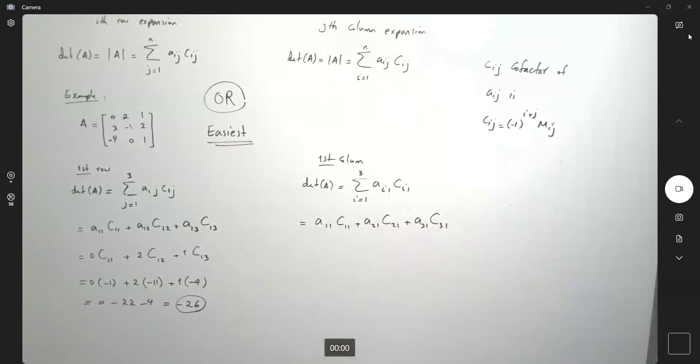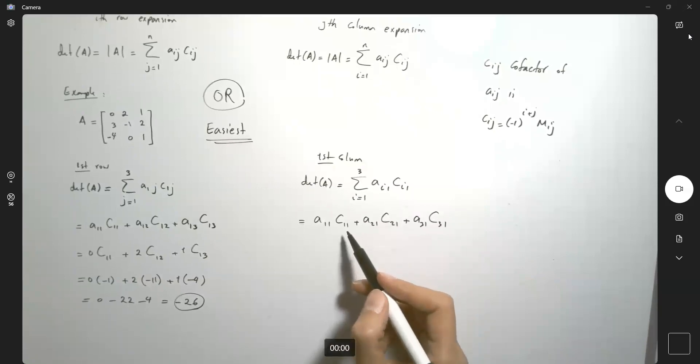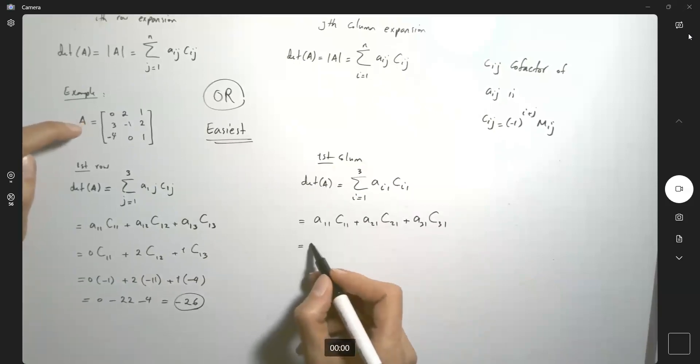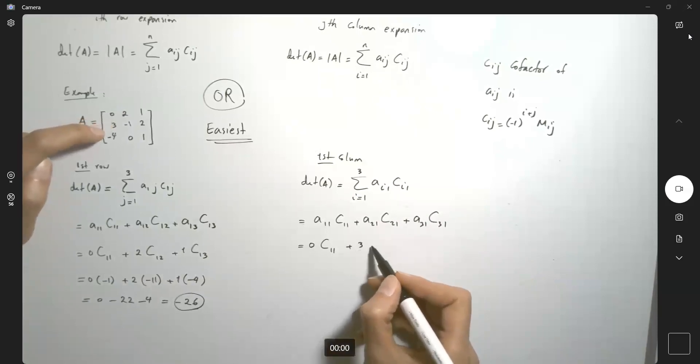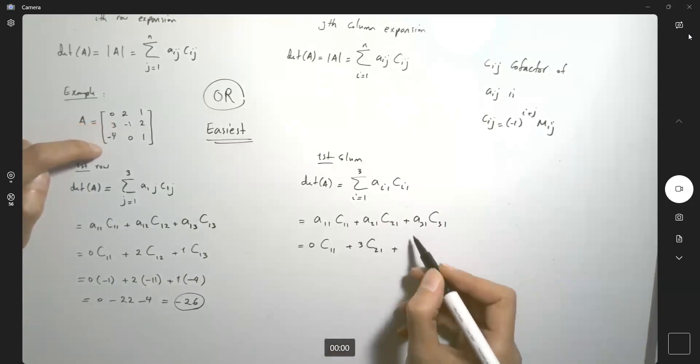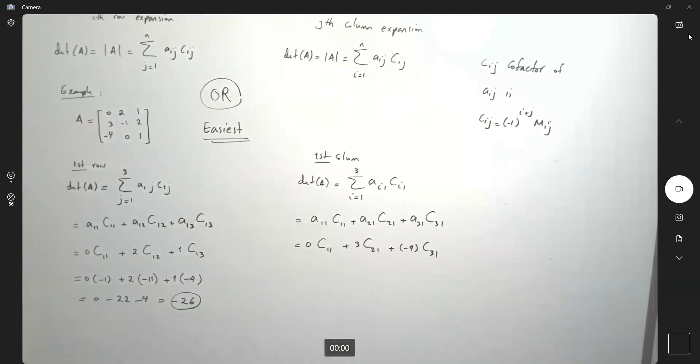This equals 0 times C1,1 plus A2,1, which is 3, times C2,1 plus A3,1, which is -4, times C3,1. So now we need to calculate each one of these separately.